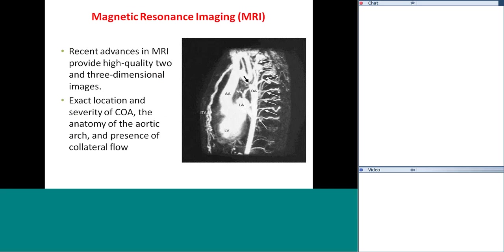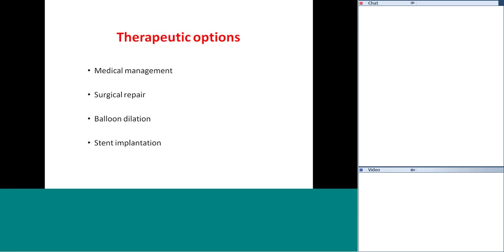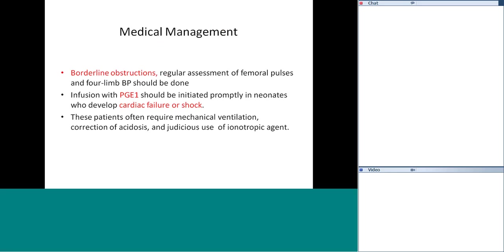Therapeutic options include medical management for mild coarctation, surgical repair, balloon dilatation, or stent implantation. For borderline obstructions, regular assessment of femoral pulses and four-limb blood pressure should be done. Prostaglandin E1 should be initiated promptly in neonates who develop cardiac failure or shock. These patients often require mechanical ventilation, correction of acidosis, and very judicious use of inotropic agents.